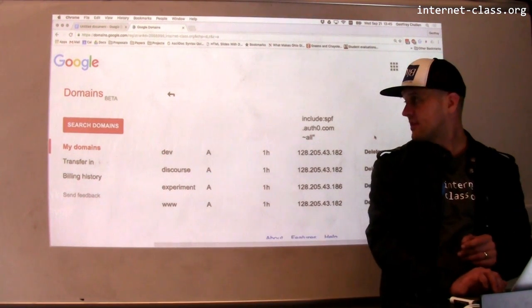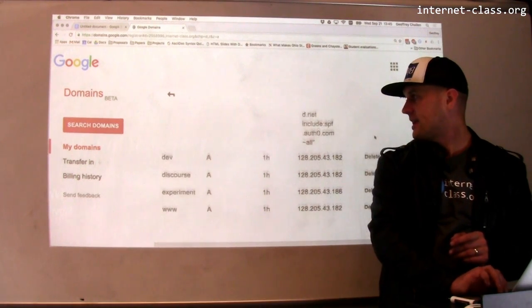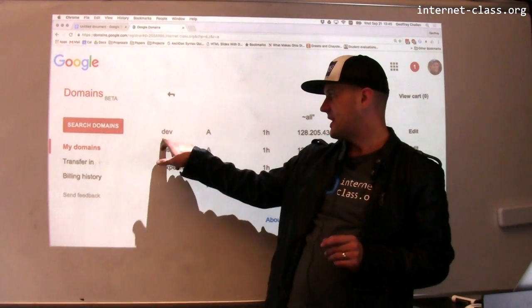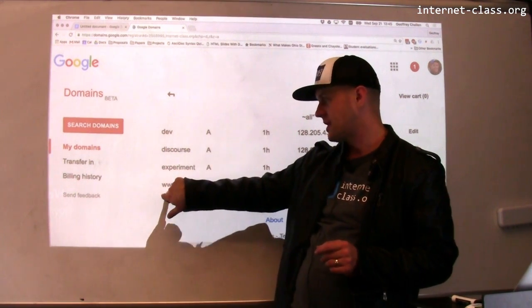So down here, what you can see is that here are the host names that I've already created on this network. So I have a host called dev. I have a host called discourse. I have a host called experiment. I also have a host called www.